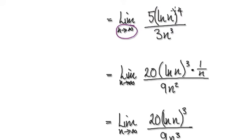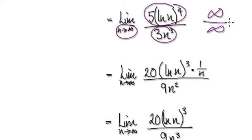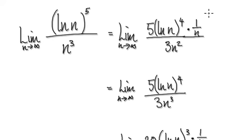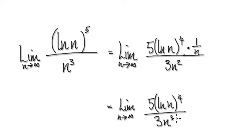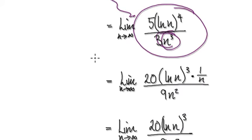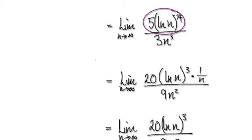Let's check it again. As n tends to infinity, this whole thing here is heading towards infinity and this thing here is heading towards infinity, so it's an indeterminate form again. You can apply L'Hôpital's rule again. Notice that to the power of three here is pretty much the same as before - if you repeat the process, it's infinity over infinity.